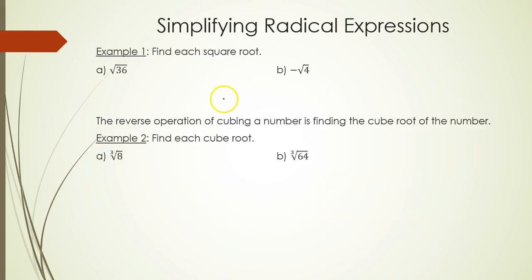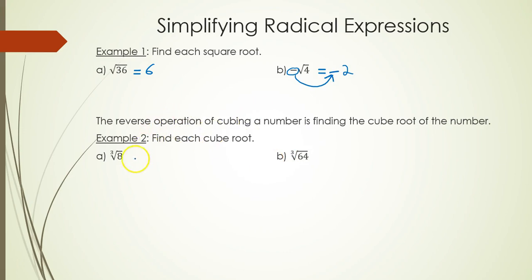Example one, part A: the square root of 36. What times itself gives you 36? That's 6. Part B: the negative goes along for the ride, then you take the square root of 4, which is 2. Cube roots: the cube root of 8 means what number when multiplied with itself three times gives you 64 — and that is 4.